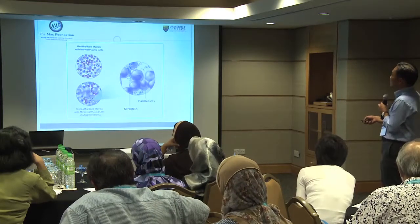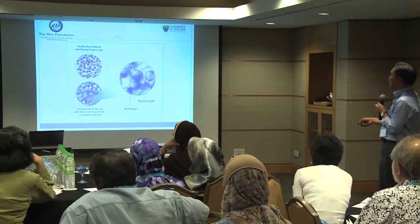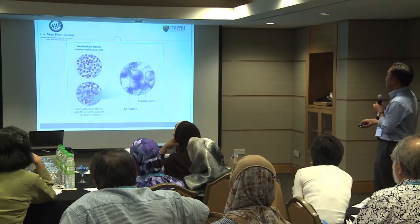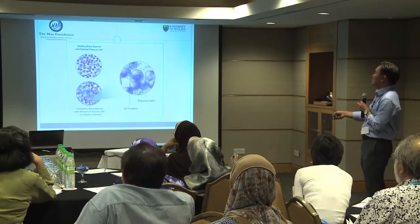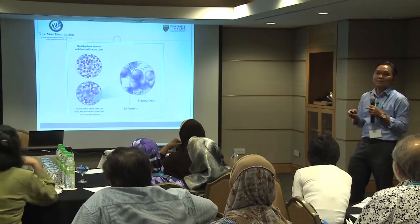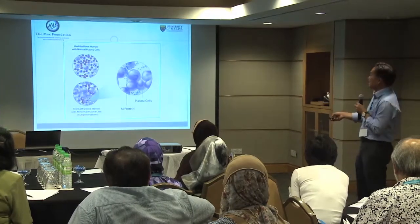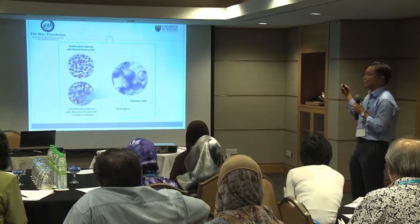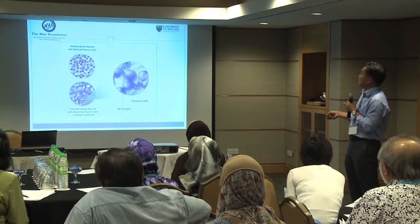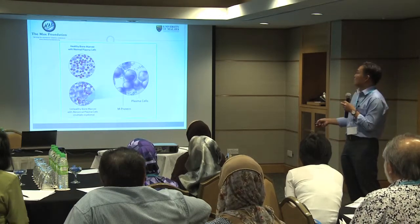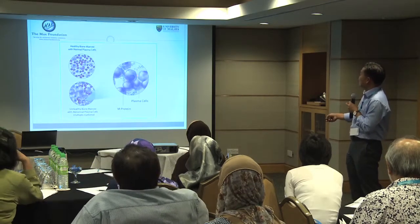In a healthy bone marrow, we have normal plasma cells along with normal red cells and white cells. But in multiple myeloma — unhealthy bone marrow — there are too many plasma cells. The red cells are reduced because the plasma cells dominate. Cancer cells are not necessarily stronger; actually they live longer because they don't die, and they proliferate faster, so they accumulate and suppress the normal tissue.